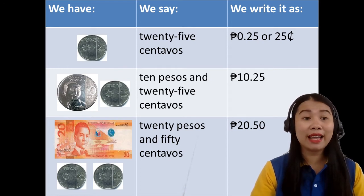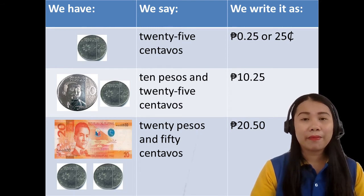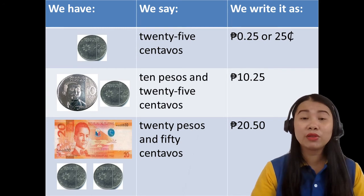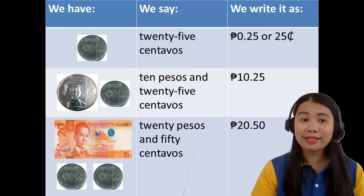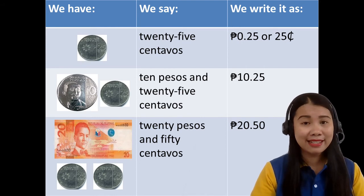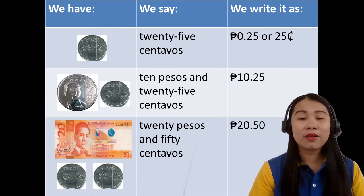Next, we have one 10-peso coin and one 25-centavo coin. We say 10 pesos and 25 centavos. We write it as: peso sign, one zero decimal point two five. And, we have one 20-peso bill and two 25-centavo coins. We say 20 pesos and 50 centavos. That means two 25-centavos is equal to 50 centavos. We write it as: peso sign, two zero decimal point five zero.